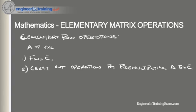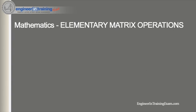Let's say we have a 3 by 2 matrix with elements 0, 1, 2, 3, 4, 5. We are asked to interchange the second and third rows. So the operation we're asked to do is to interchange the second and third rows.